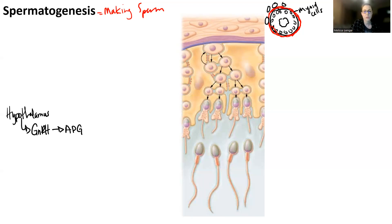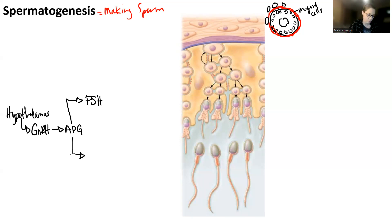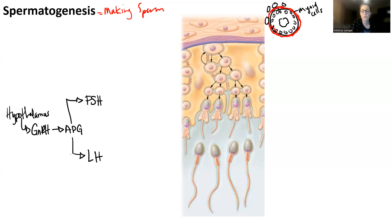The anterior pituitary gland is then going to release two hormones — basically two gonadotropins. One of those gonadotropins is follicle-stimulating hormone, and you write out the whole thing. The other is luteinizing hormone, or LH. FSH and LH are going to target specific parts of the seminiferous tubules.